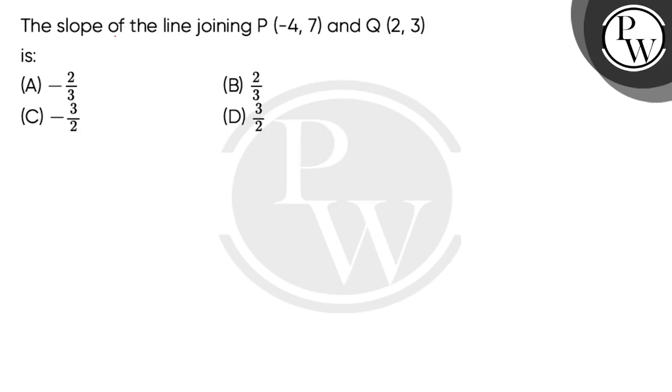Hello children, let's read the question. The slope of the line joining P(-4, 7) and Q(2, 3) is?